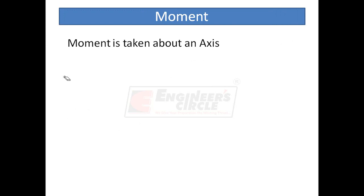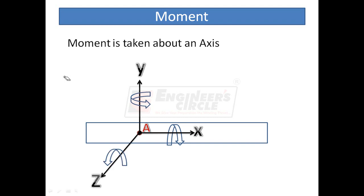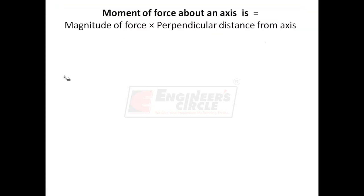Next is moment. Moment is always taken about an axis. Consider a body and a point A. If we want to take the moment about point A, we must first think of an axis — whether about the X axis, Y axis, Z axis, or any other axis passing through point A. The magnitude of moment is given by the product of the force and the perpendicular distance from the axis.